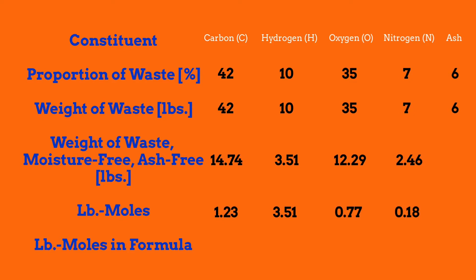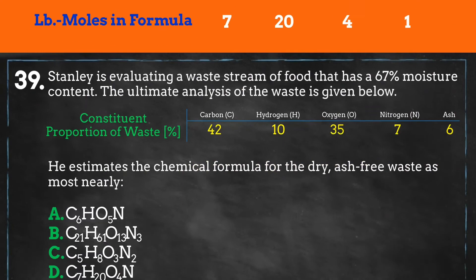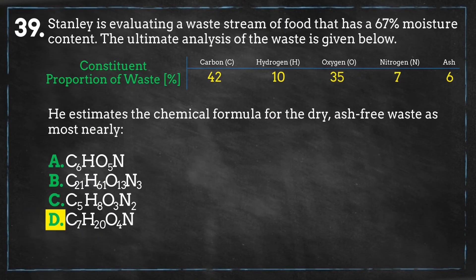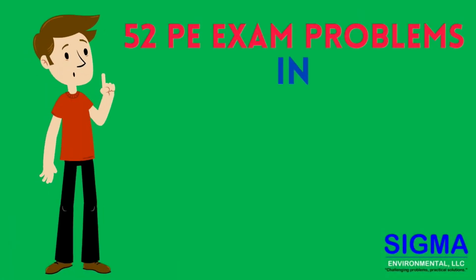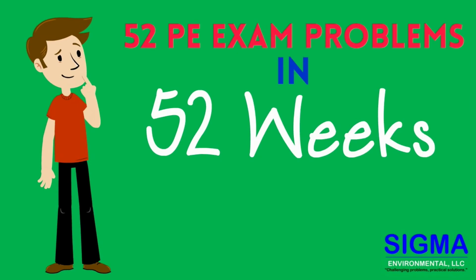Whenever you create chemical formulas, you need to find the least common multiple of your subscripts to get whole numbers. Our smallest molar amount is nitrogen, for which we calculated 0.18 moles. We divide all molar amounts by 0.18, and we get: 7 atoms of carbon, 20 atoms of hydrogen, 4 atoms of oxygen, and 1 atom of nitrogen — giving us C7H20O4N. Your answer should be D. Join us for episode 40 of 52 PE exam problems in 52 weeks.